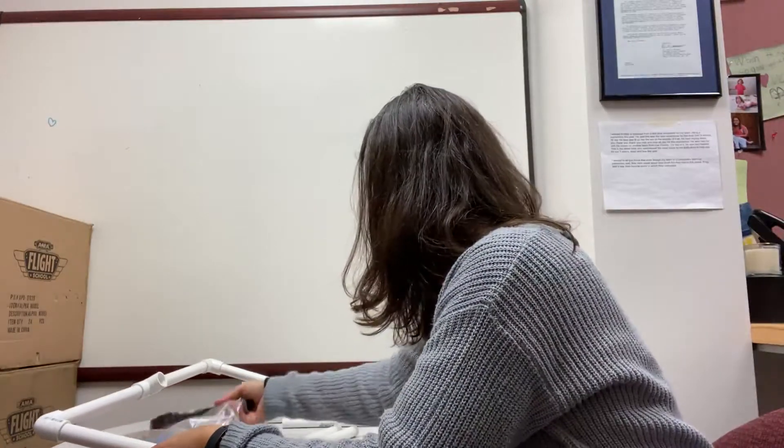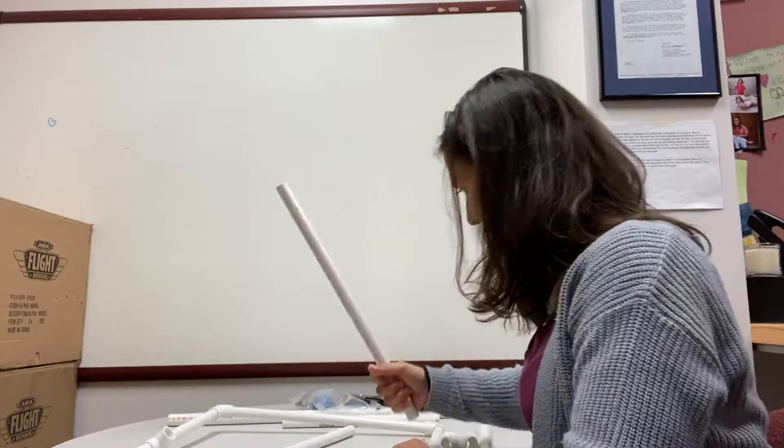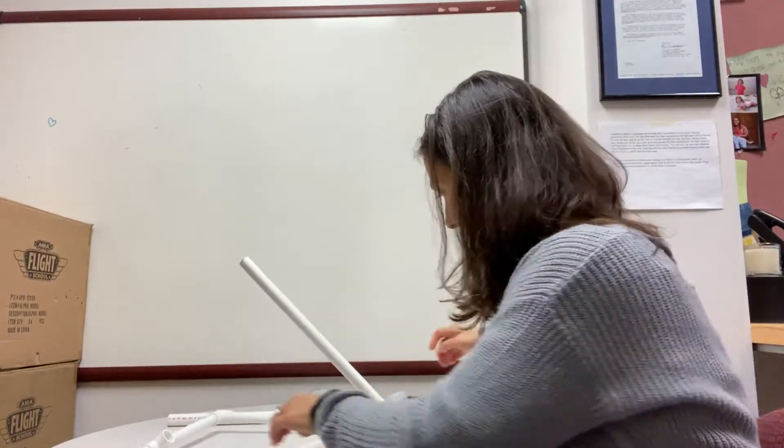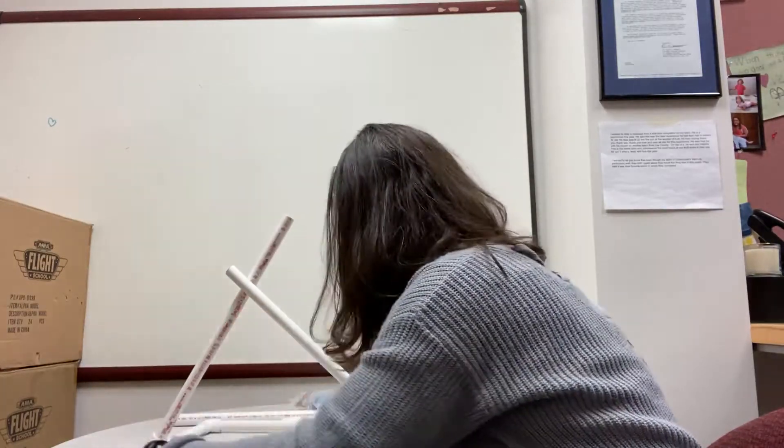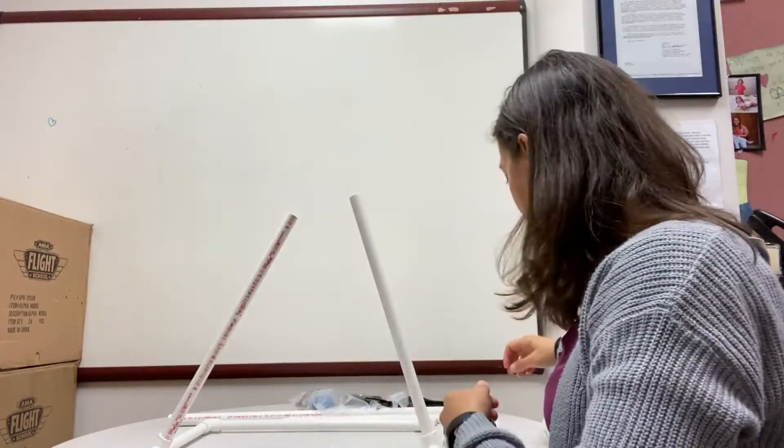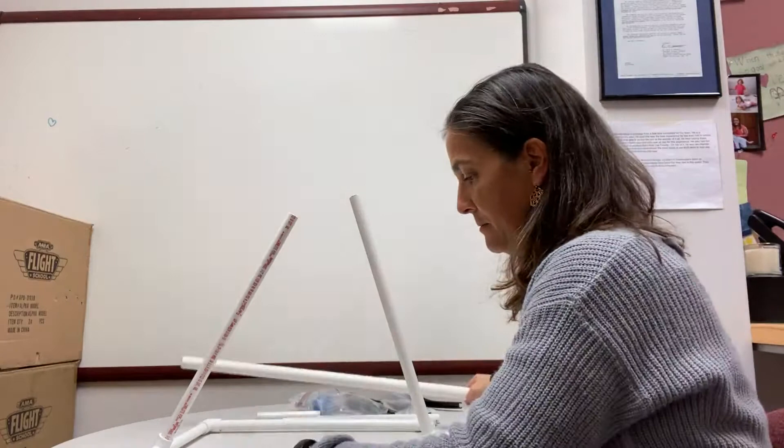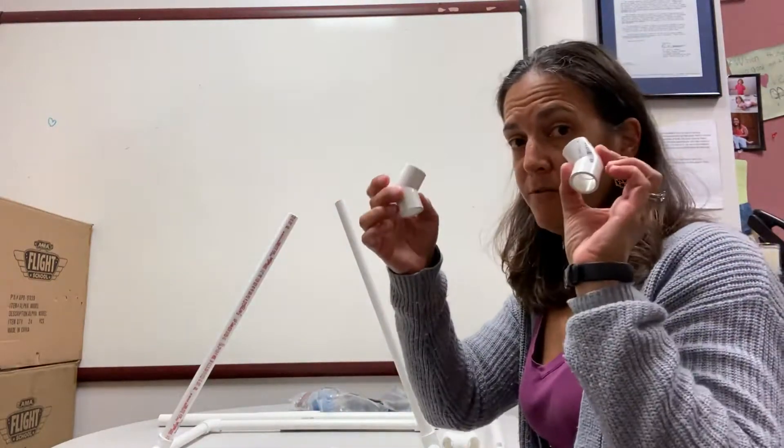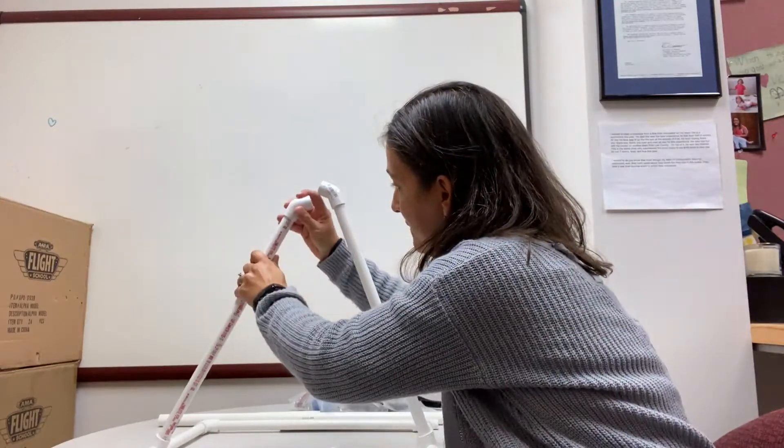Into the T's go the other two pieces that are the same size. The great thing about this PVC, you can kind of tweak it and mess around with it. Then on the tops of these two pieces go your 45s, so they're not bent quite as much—45 degree angles instead of 90.